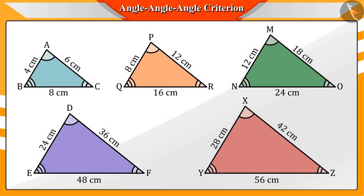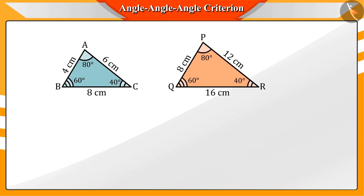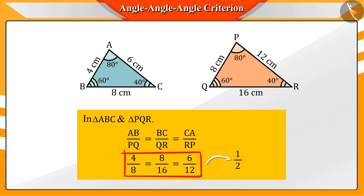Let the value of the corresponding angles of all triangles be 80, 60, and 40 degrees respectively. If we notice triangles ABC and PQR, we see that their corresponding sides AB and PQ, BC and QR, and CA and RP are all in the ratio of 1 by 2.